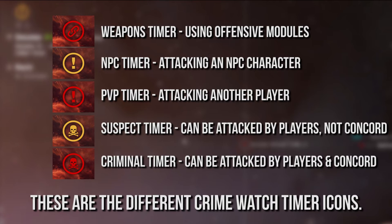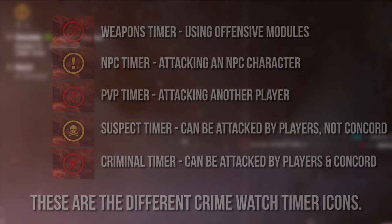These different flags also help determine how other players and NPCs will interact with the player. For example, if a player is in high security or low security space and has a criminal flag, then other players can attack them without the NPC police intervening. Having a criminal timer in a high security system will also cause the NPC police to attack the player. But in low security systems, they will not engage, with the exception of on-gate guns on stargates and stations.